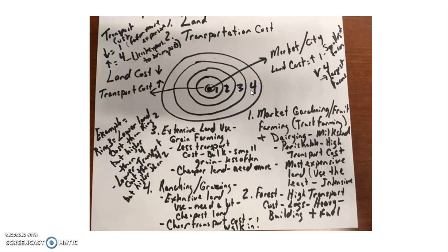Out on the outskirts, ring four, transportation is the most expensive. Ring one is market gardening and fruit farming, also called truck farming, and dairying. Ring two is forest or timber. Ring three is grain farming — extensive land use. Grains include corn, wheat, soybean, millet, sorghum, and rice — all grown on a stalk and they're seasonal. Finally, ring four has ranching and grazing — livestock ranching.